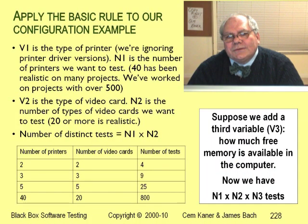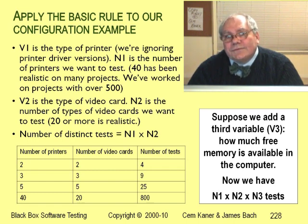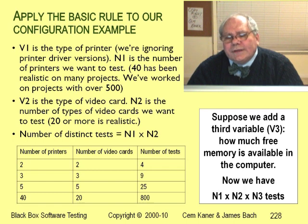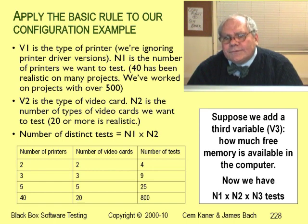When we test combinations of things that make up the environment of the program — for example, combinations of devices, versions of system software, and communications with different types of servers — we call that kind of combination testing configuration testing. So if we test 40 printers and 20 video cards, there are going to be 40 times 20 equals 800 configurations. What if we also test how much available memory there is? Let's suppose we have two levels of memory: barely enough and lots.